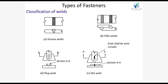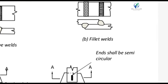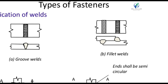Now, classification of welds. As you can see in the figure, there are four types of welded joints: groove weld, fillet weld, plug weld, and slot weld. Fillet welds are suitable for lap joints and T-joints, as seen in the figure. Groove welds are suitable for butt joints, corner joints, or edge joints.